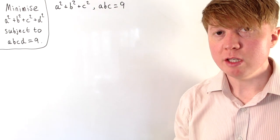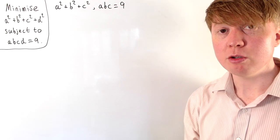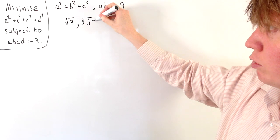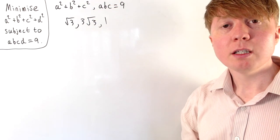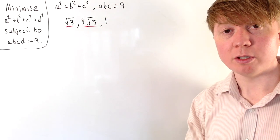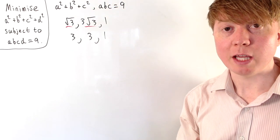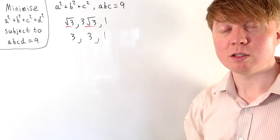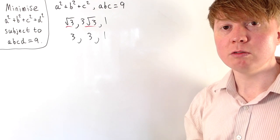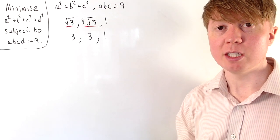Now consider three variables: minimise a² + b² + c² subject to the product being constant. We can use what we already know from the two-variable case. If a, b, and c are all different — say root 3, 3 root 3, and 1 — we can tweak any two of them to make them equal (e.g., change to 3, 3, 1), which reduces a² + b² and hence also reduces a² + b² + c². So we only need to consider cases where two are equal or all three are equal.